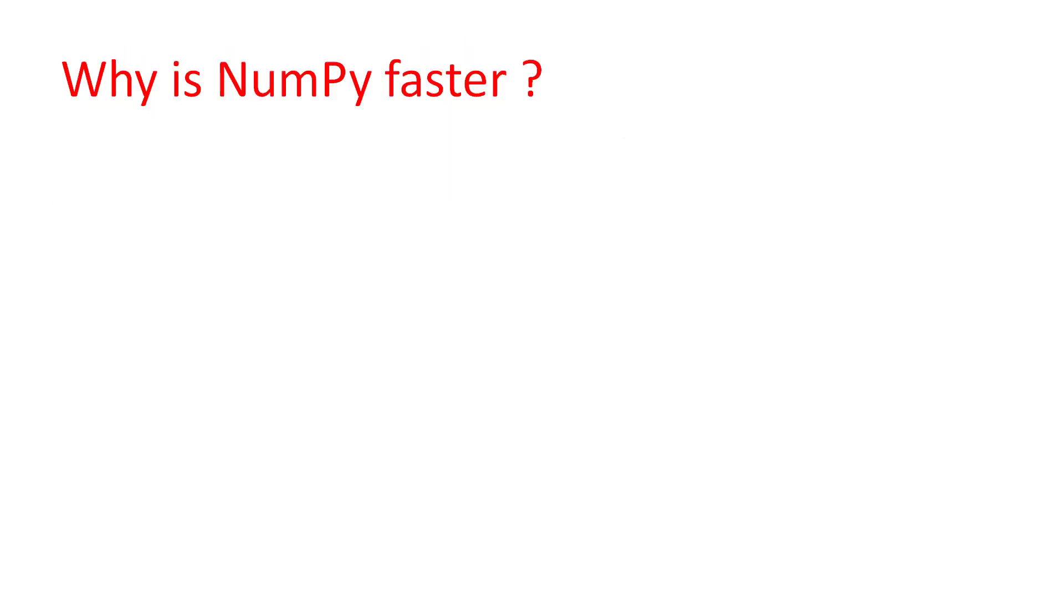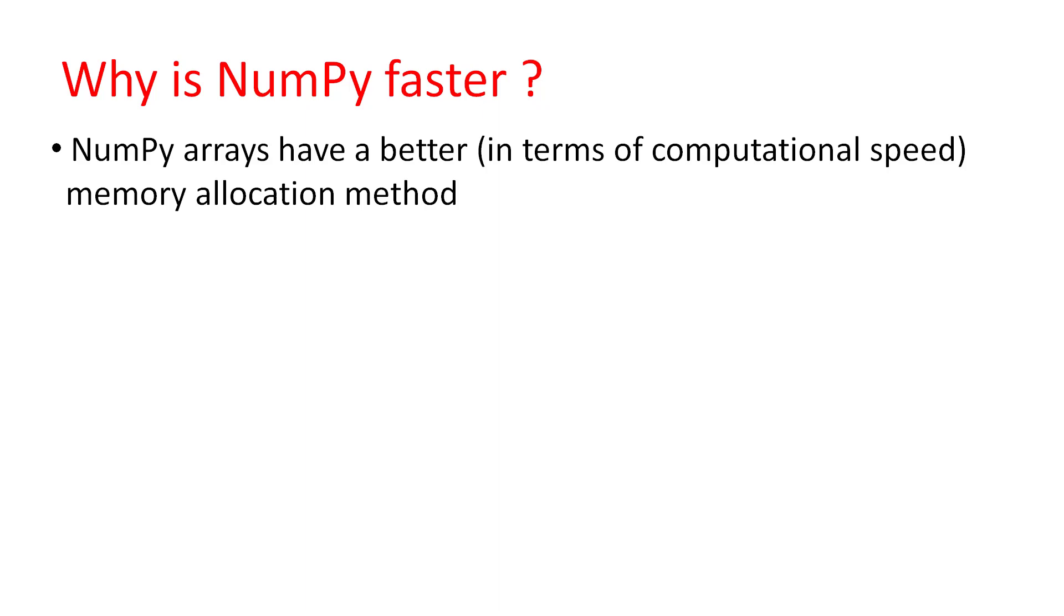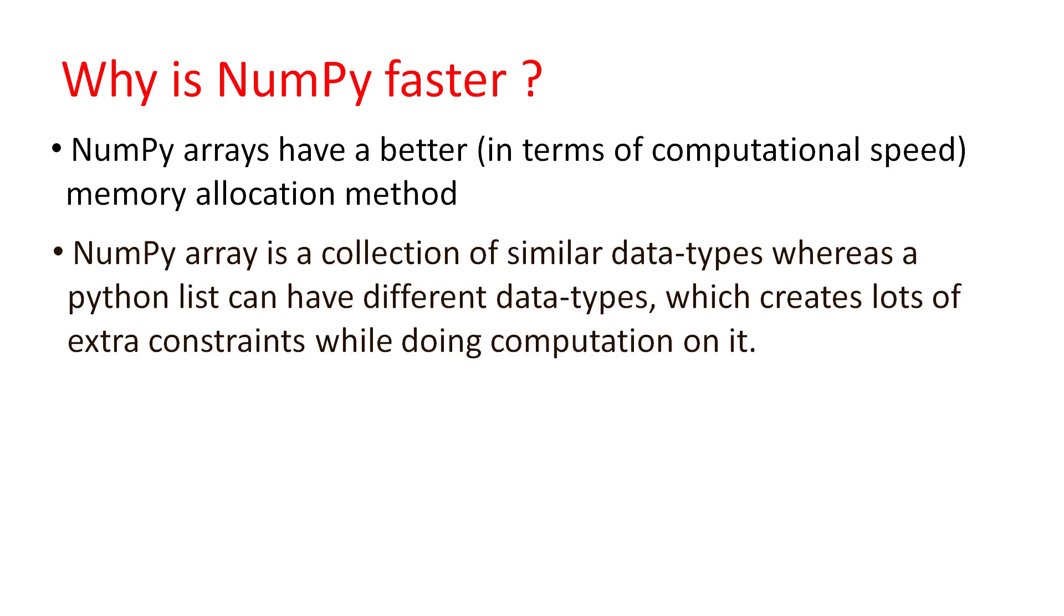Next, we shall discuss why NumPy is faster. NumPy arrays have a better memory allocation method in terms of computational speed. NumPy array is a collection of similar data types, whereas a Python list can have different data types. This creates lots of extra constraints while doing computations on it.